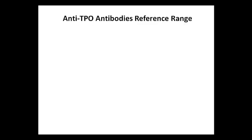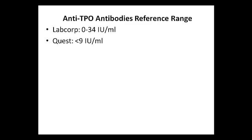Let's take a look at the reference range for anti-TPO antibodies. According to LabCorp, their reference range is 0 to 34 IUs per milliliter. For Quest Diagnostics, their reference range is less than 9 international units per milliliter. We need to keep in mind that different labs use different testing procedures, so it's very difficult to compare lab to lab, and I'll talk more about this when comparing antithyroglobulin antibodies.